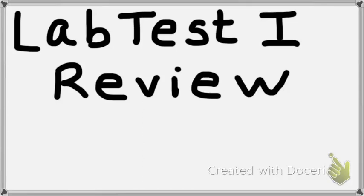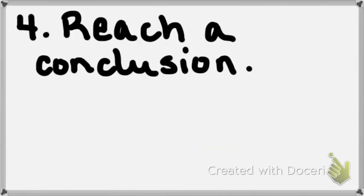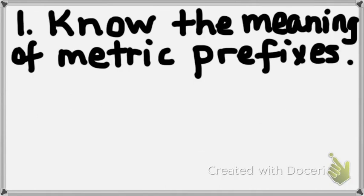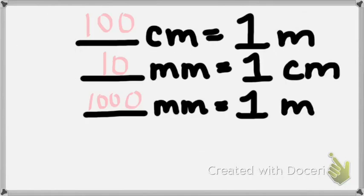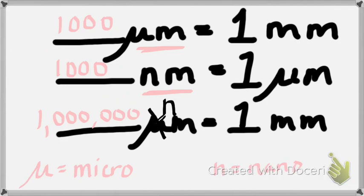Okay, so lab test 1 review, we're going to go through this review sheet together and we will be omitting exercise 1. We did not do exercise 1 on the scientific method in lab, so we will be omitting exercise 1. I'm going to omit that.